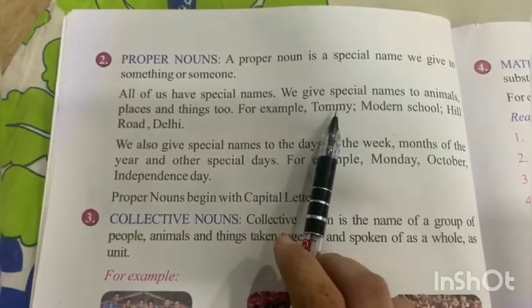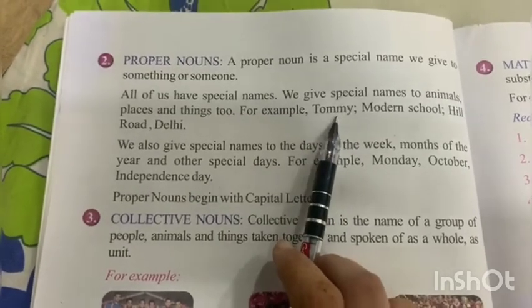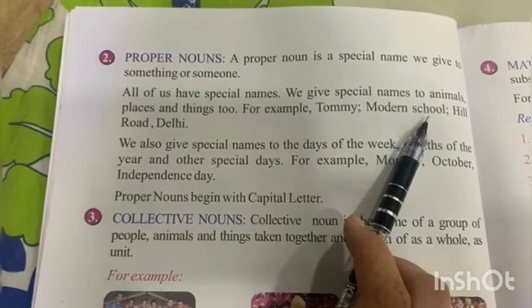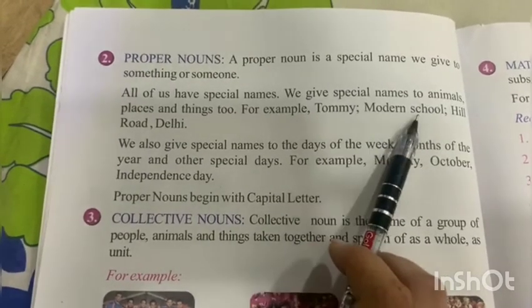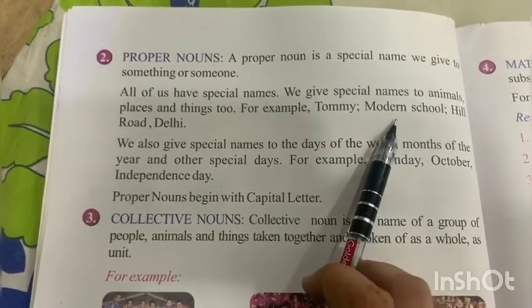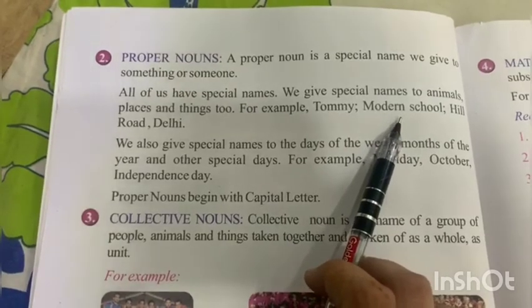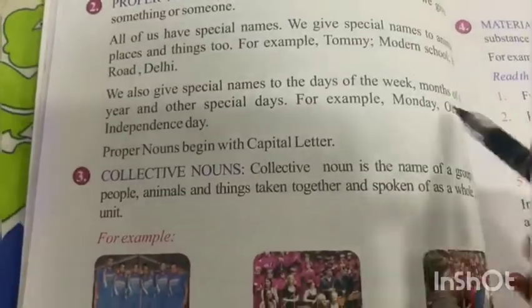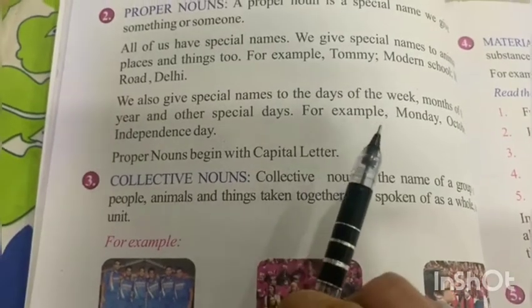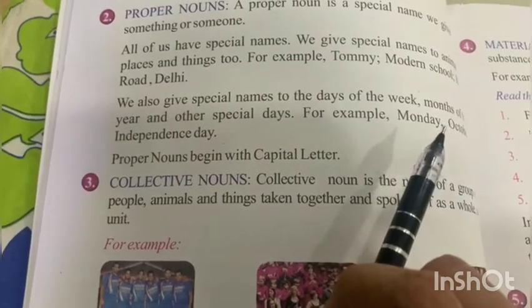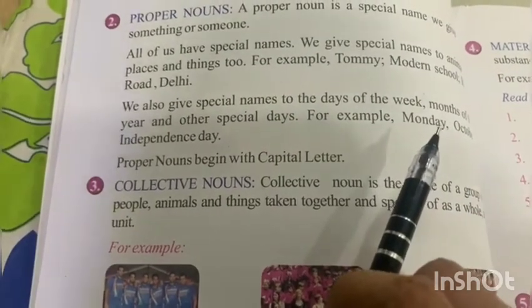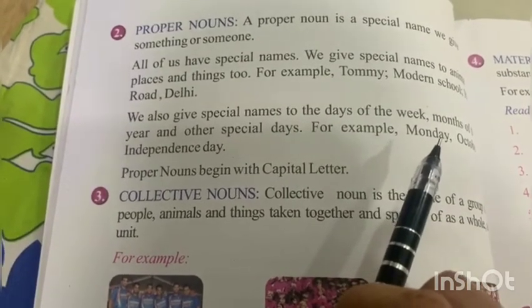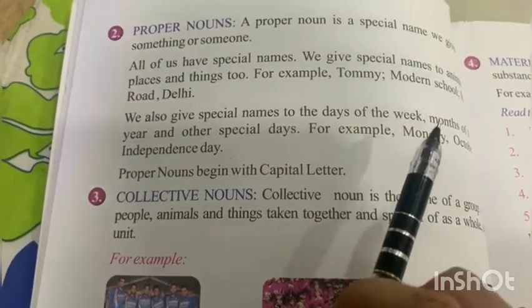Tommy is a proper noun because we have given that animal one particular special name. Modern School — here Modern School is the particular name of a school, so it is a proper noun. Hill Road, Delhi — months like January, February, March, April — we are calling the name of the month, so these are also proper nouns.